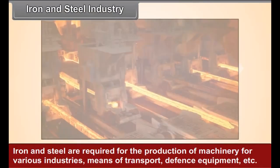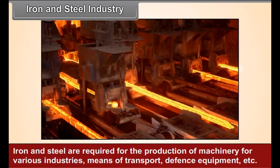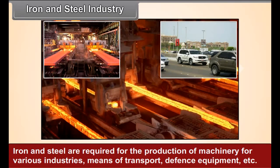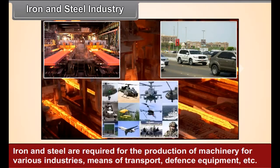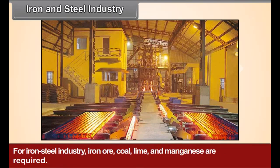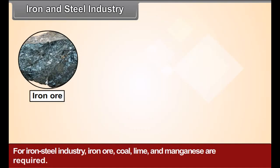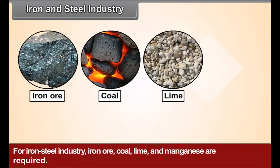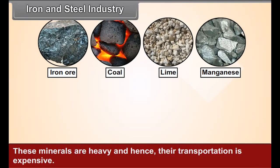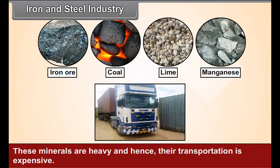Iron and steel are required for the production of machinery for various industries, means of transport, defense equipment, etc. Hence, iron and steel industry has unparalleled importance in industrialization. For the iron and steel industry, iron ore, coal, lime and manganese are required. These minerals are heavy and hence their transportation is expensive.